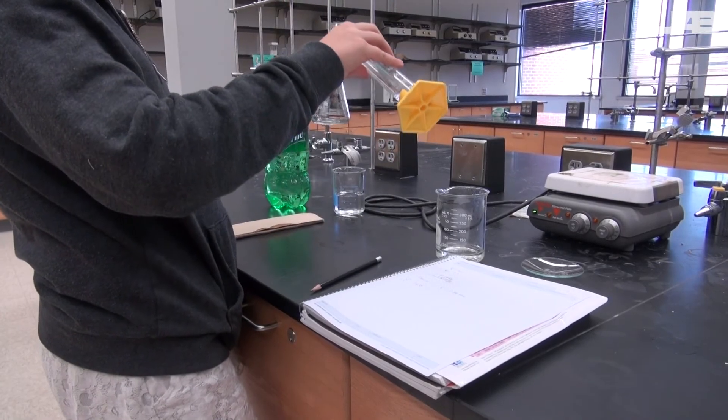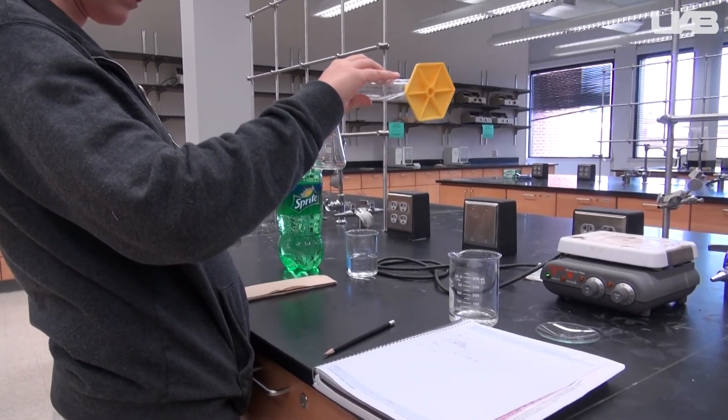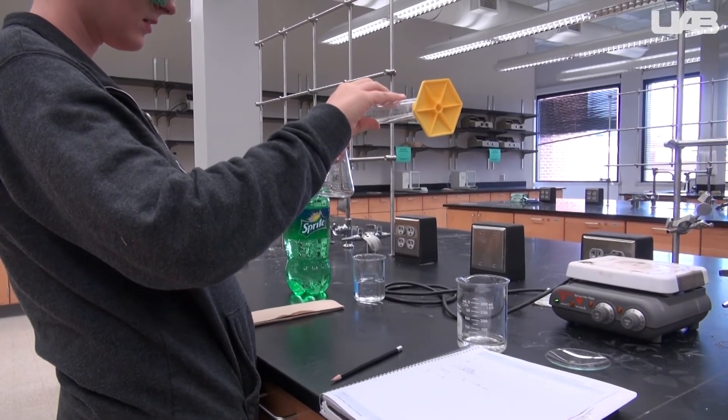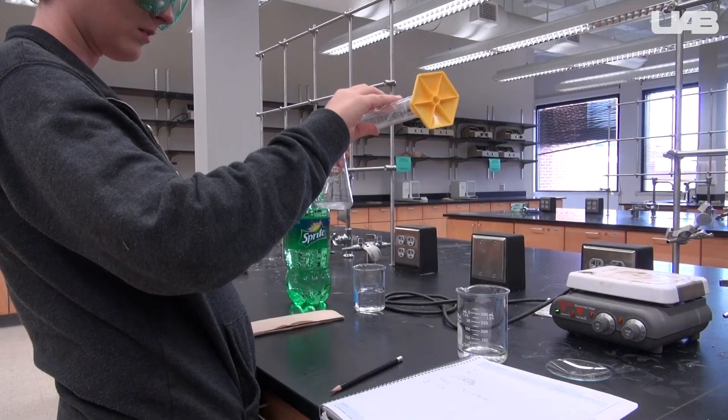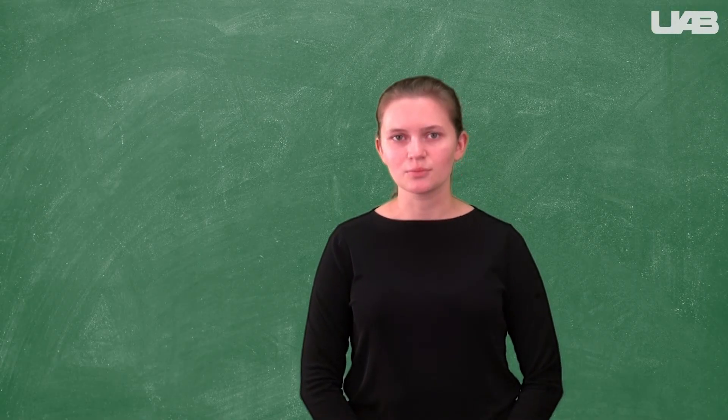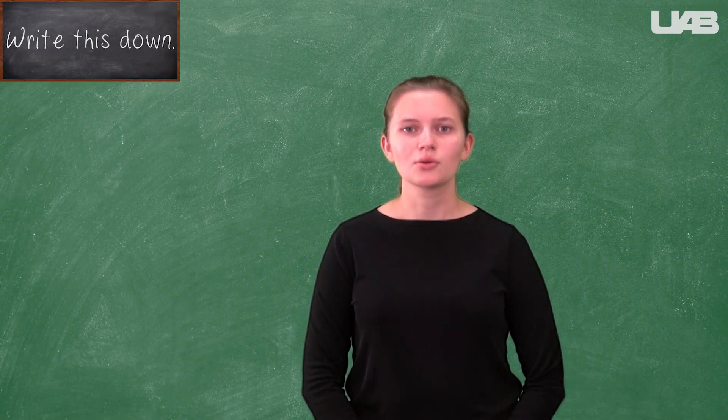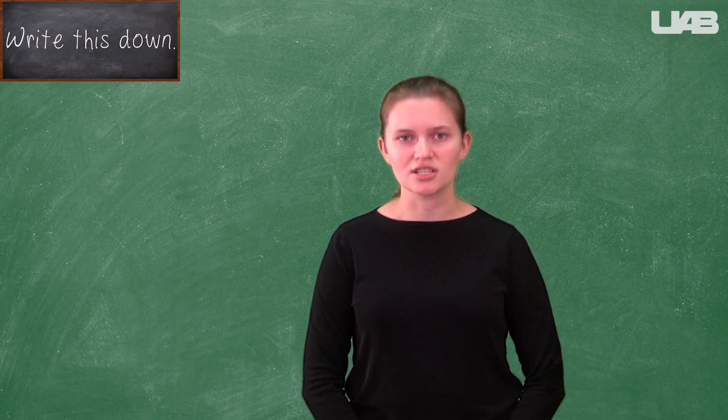Pour about 25 milliliters in an Erlenmeyer flask and add some distilled water to make the volume great enough that the endpoint is easy to see. Follow the same titration procedure shown earlier. You will perform a total of three titrations of the soda.